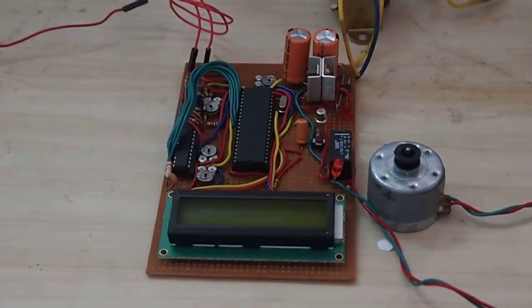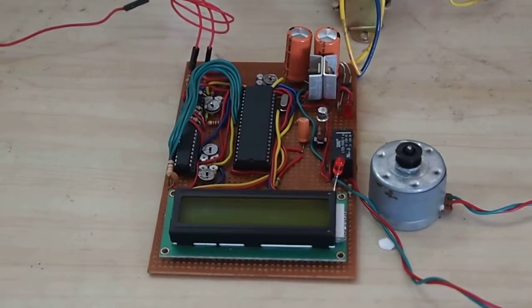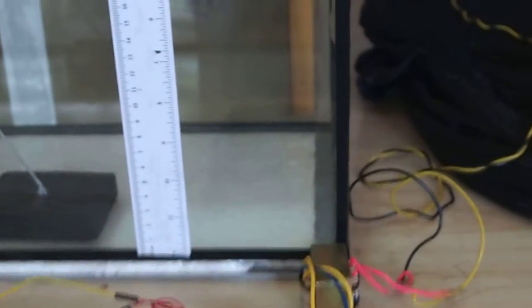This is our circuit which is now being switched off. There is the LCD panel and the motor you have seen. There is a transformer which is connected to the circuit and the main supply.